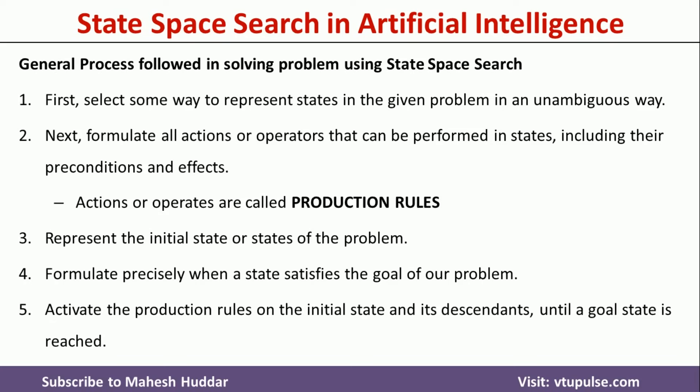After this, we need to activate the production rules — that is, apply the production rules one at a time to the initial state and its descendants so that we can reach the goal state. Once you reach the goal state, the problem is solved. So to summarize: represent the problem in the form of states unambiguously, formulate all production rules, represent the initial state, formulate precisely when the goal is satisfied, and finally activate the production rules to reach the goal state.